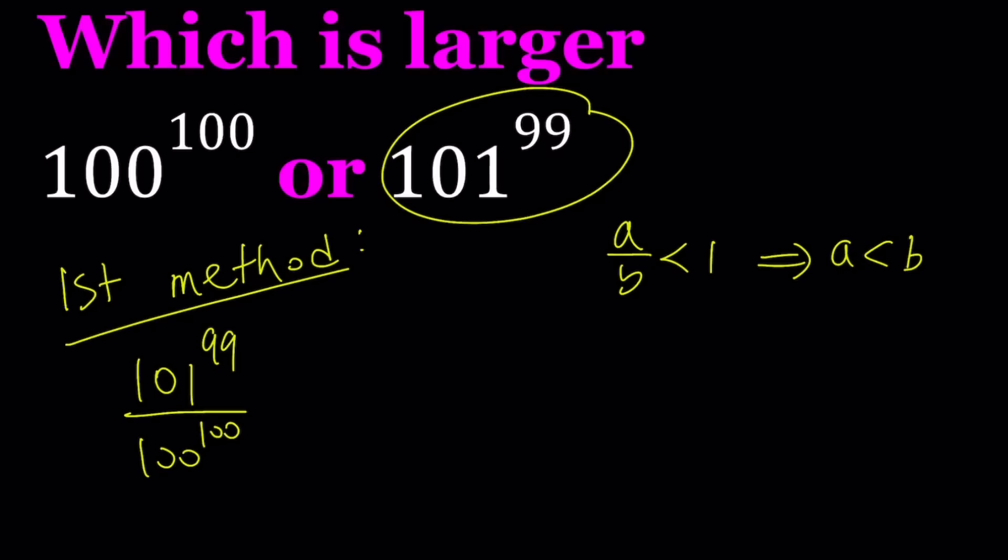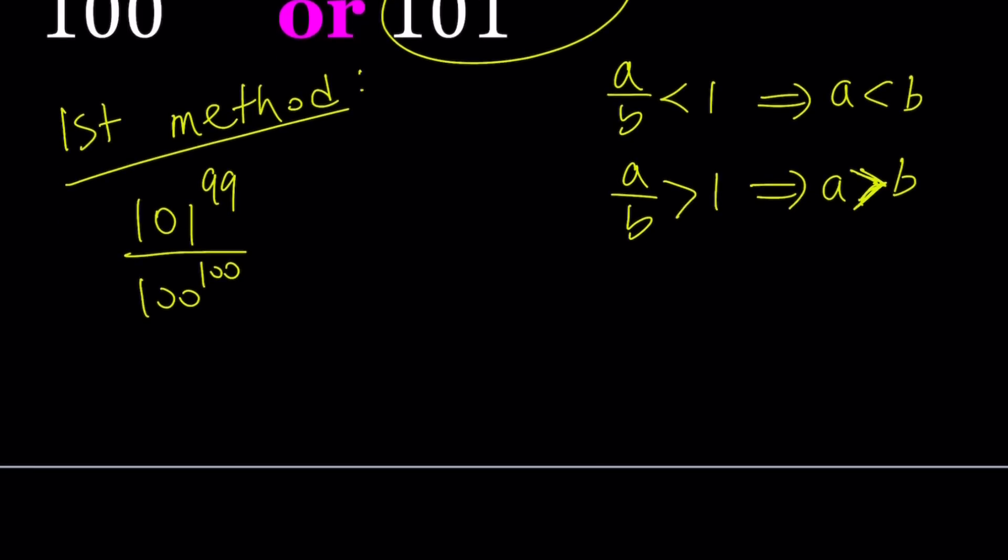Obviously, you don't want this to be 1 because that means a and b are equal. So if you're looking at the differences, then you want the difference to be positive or negative. We want to compare this to 1, in other words.